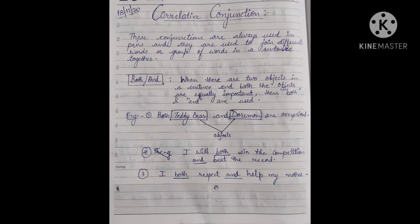This means that if any sentence has two objects - things being talked about or things that are impacted - and both have equal importance, then 'both' and 'and' are used together. For example, you can see on the screen: 'Both teddy bear and Doraemon are overpriced.'